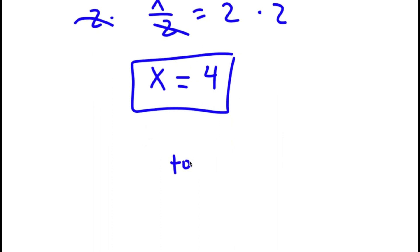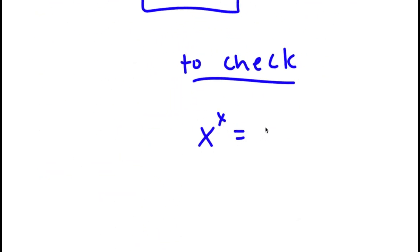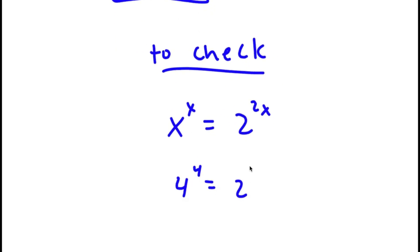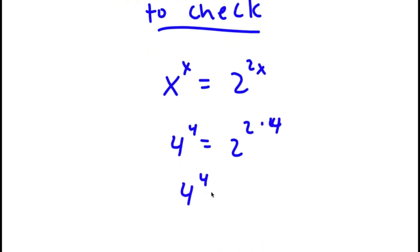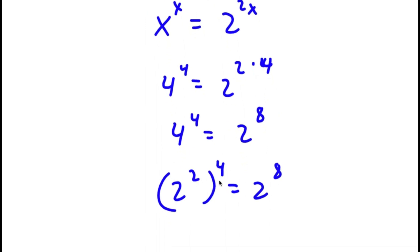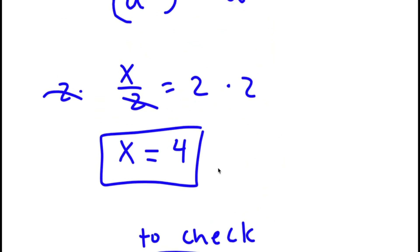Now to check: my original equation was x to the power of x is equal to 2 to the power of 2x. I know x equals 4, so I have 4 to the power of 4 is equal to 2 to the power of 2 times 4, which is 2 to the power of 8. Now 4 is the same thing as 2 squared, so I have 2 squared to the power of 4 equals 2 to the power of 8. 2 times 4 is 8, so 2 to the power of 8 equals 2 to the power of 8. This confirms my solution is correct.